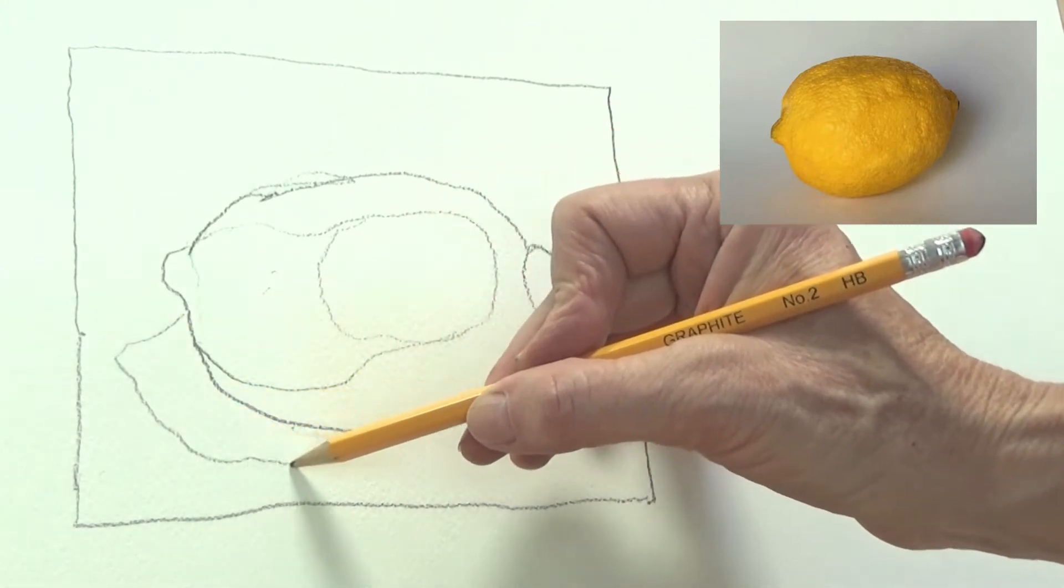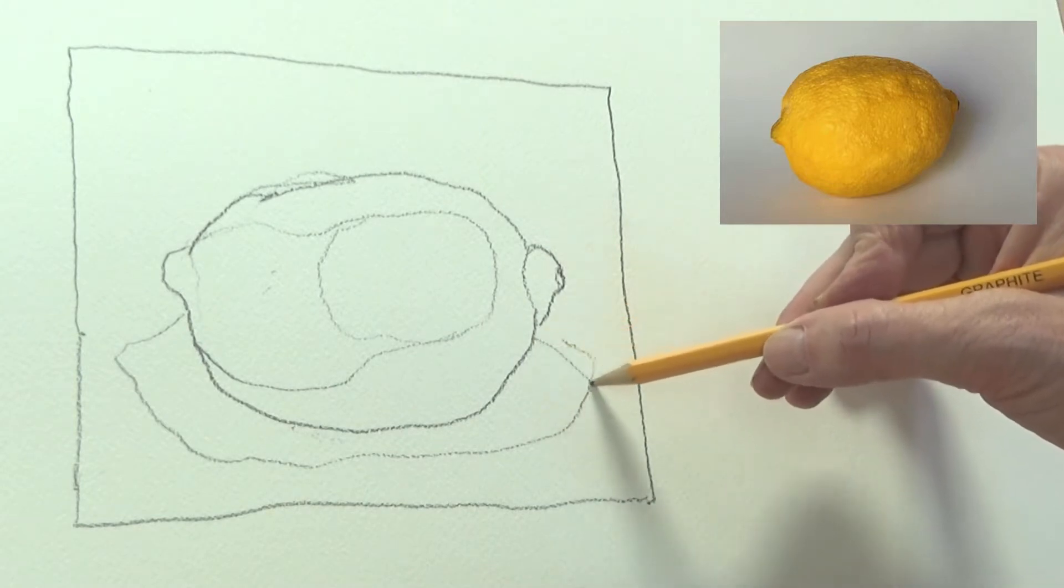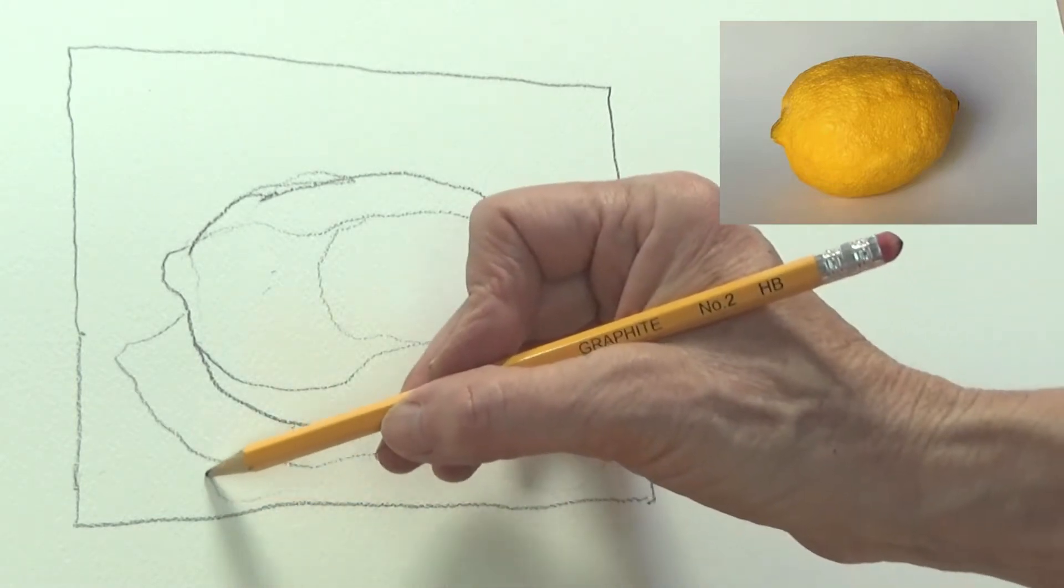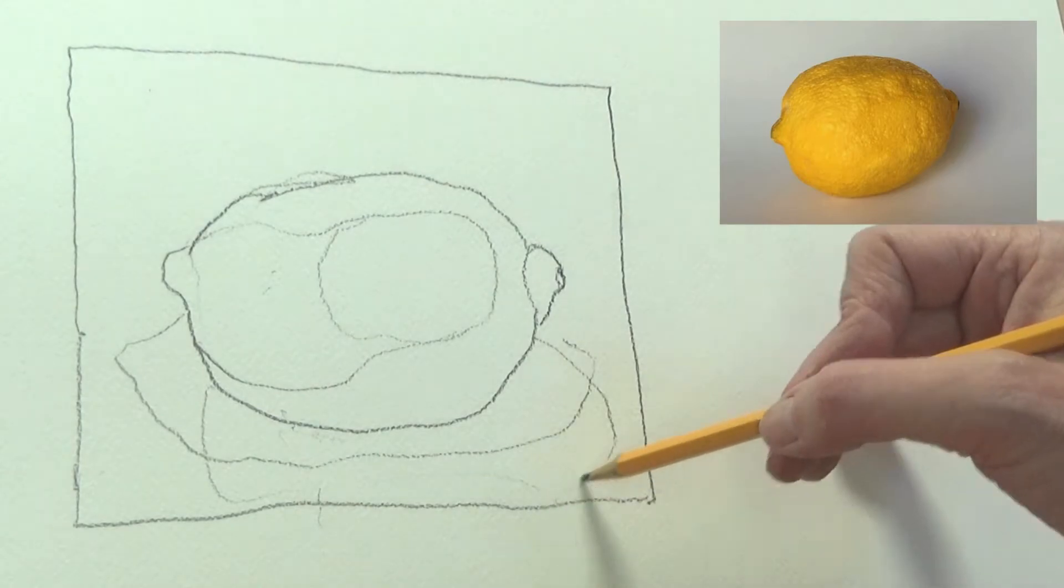I have two light sources: behind me is a big window or door, and then above me is a light. That's what's making these two different cast shadows.